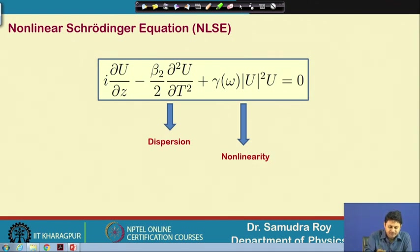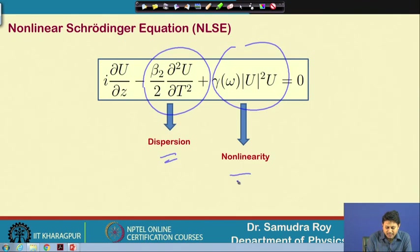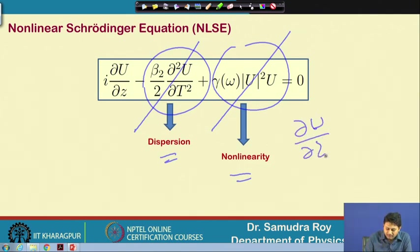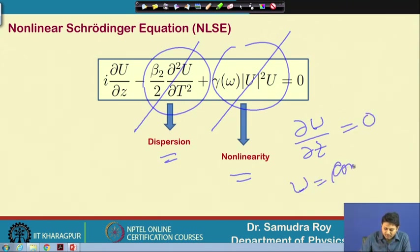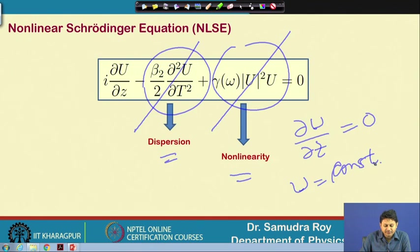In optics, the second term in the NLSE gives us dispersion and the third term gives us nonlinearity. If these two terms somehow counterbalance each other, then we have a simple equation suggesting that u is constant — in other words, there is no change in the input pulse as it propagates, meaning dispersion and nonlinearity are counterbalancing and we have stable propagation.